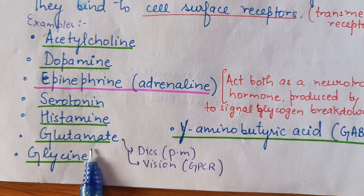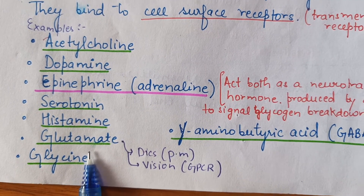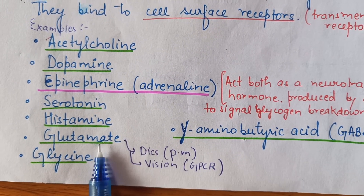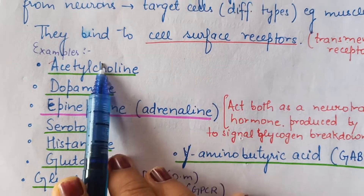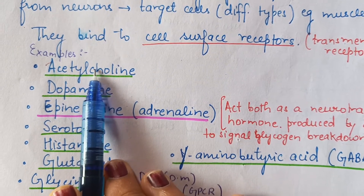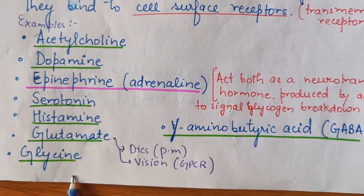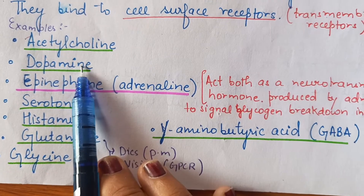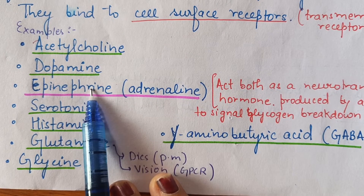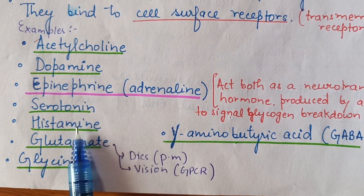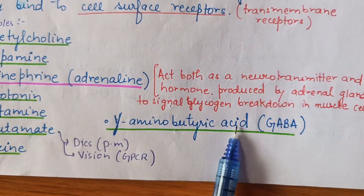Glutamate is very important in vision. It is also involved in gastrointestinal function. Other neurotransmitter examples include dopamine, epinephrine, serotonin, histamine, glycine, and GABA. These are the key neurotransmitters we cover in this topic.